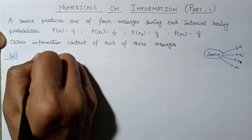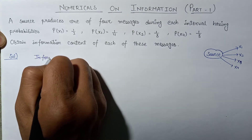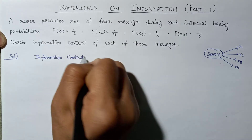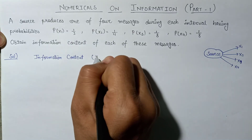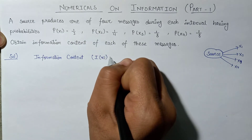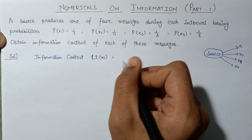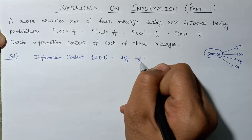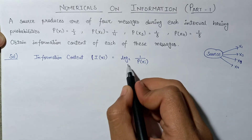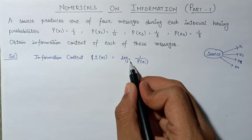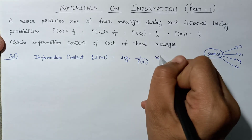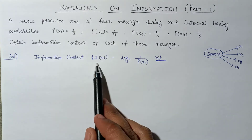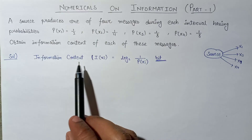Since we know that the information content is given as I(xi) = log₂(1/P(xi)), and here we are using base 2, that is why the unit of information content will be bits. We will use this formula to calculate the information content for each of these messages.